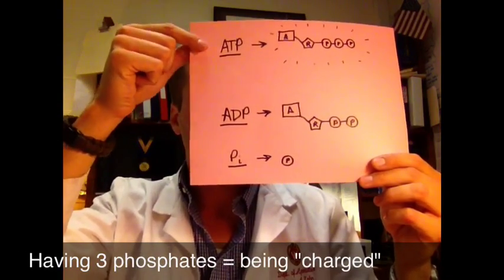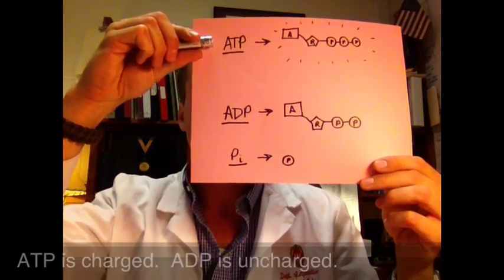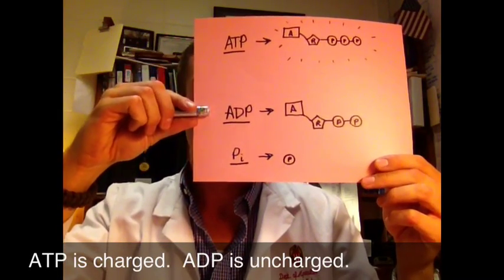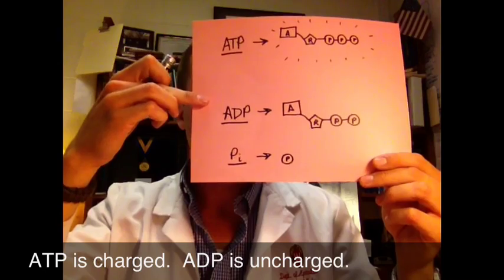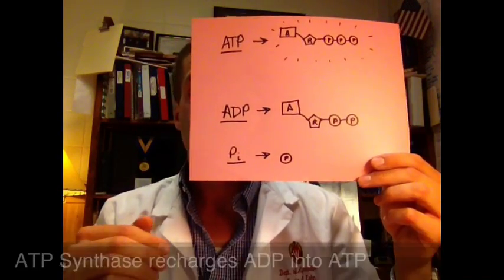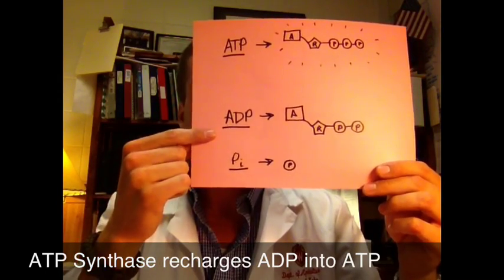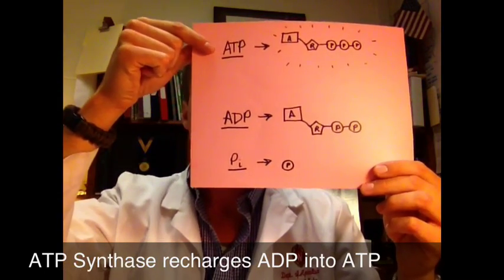In a sense, this is like a charged battery. So imagine a rechargeable battery. This is the charged version. This is the dead version. We recharge this into that using ATP synthase. ATP synthase is sort of like a battery charger. It recharges our dead ADP into our charged ATP.